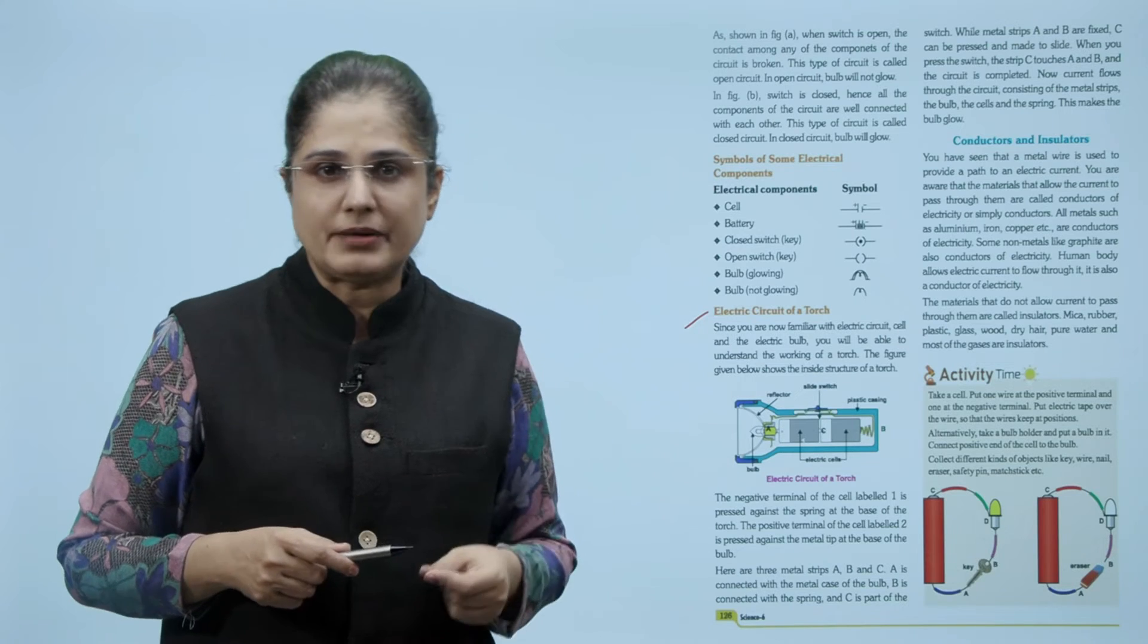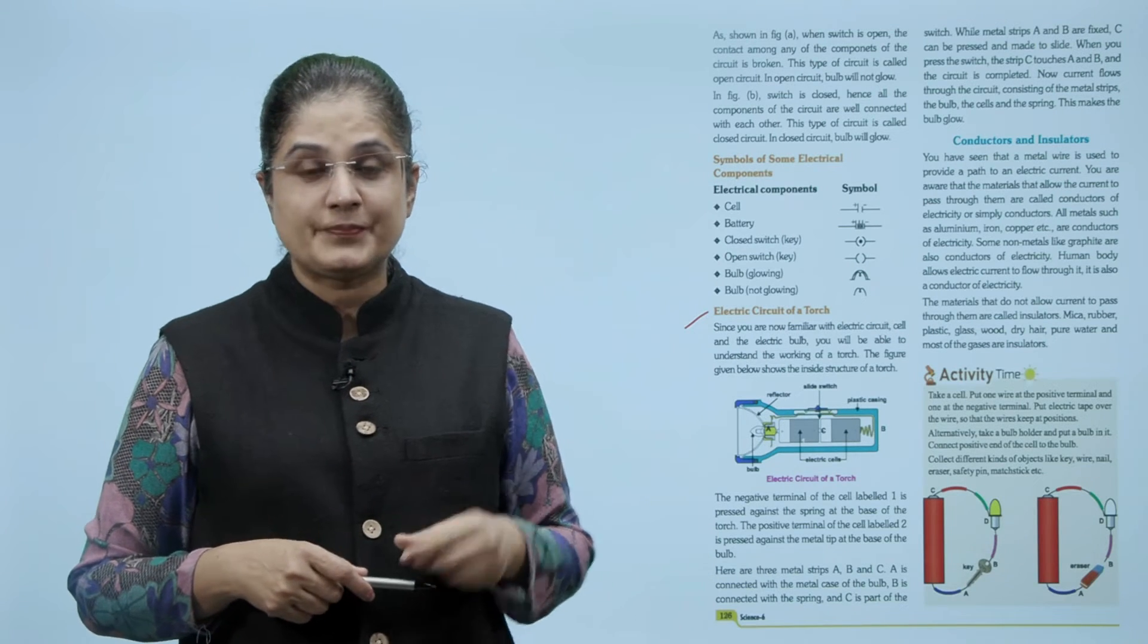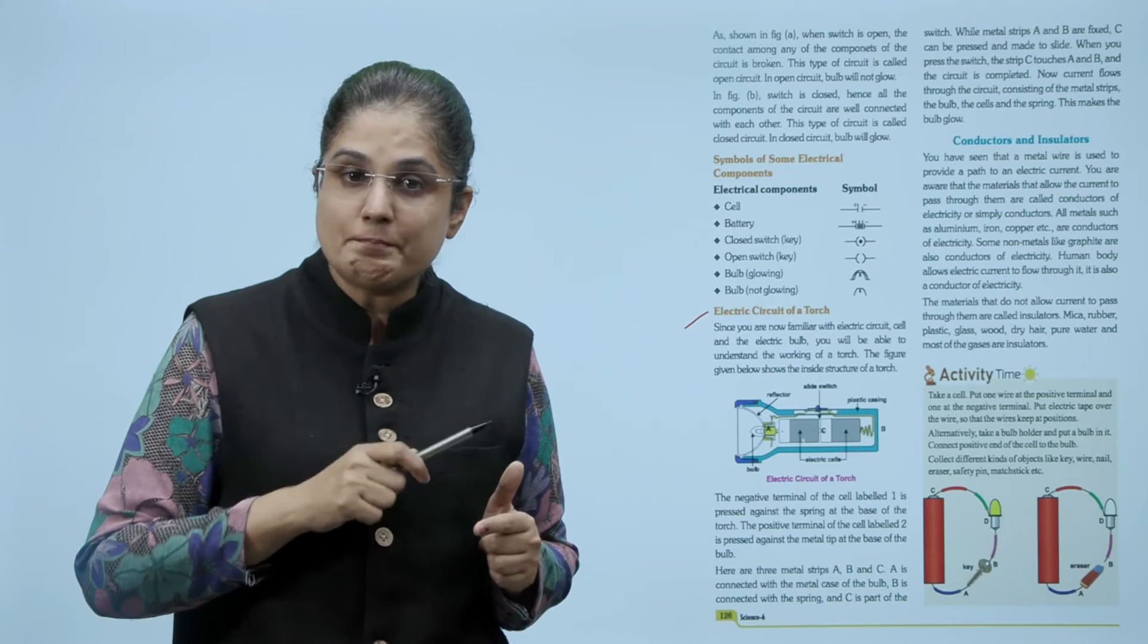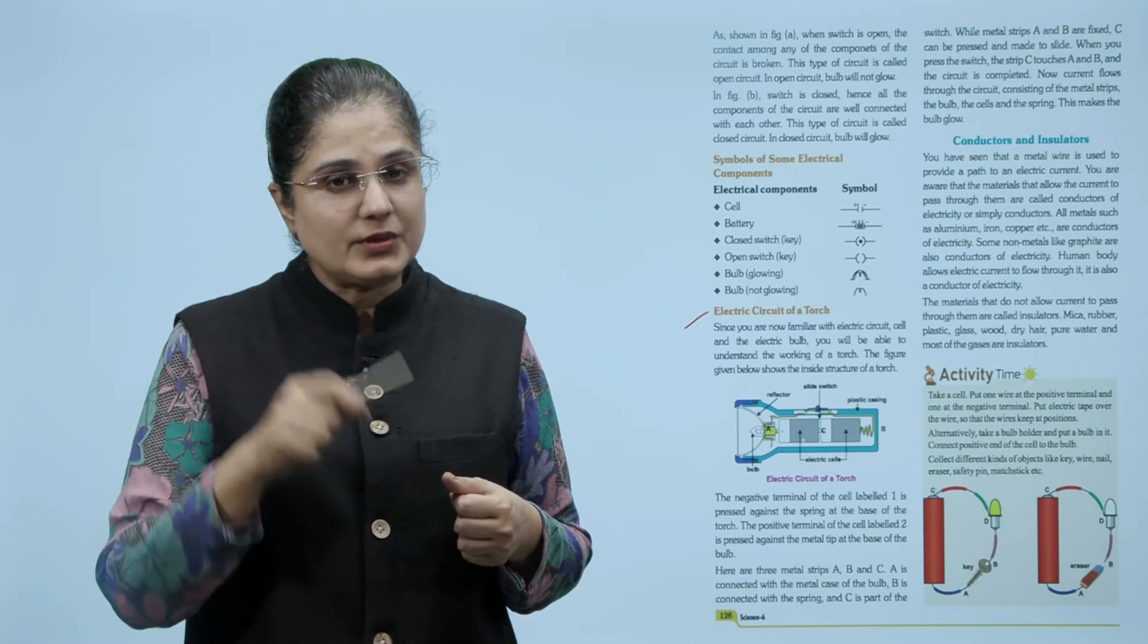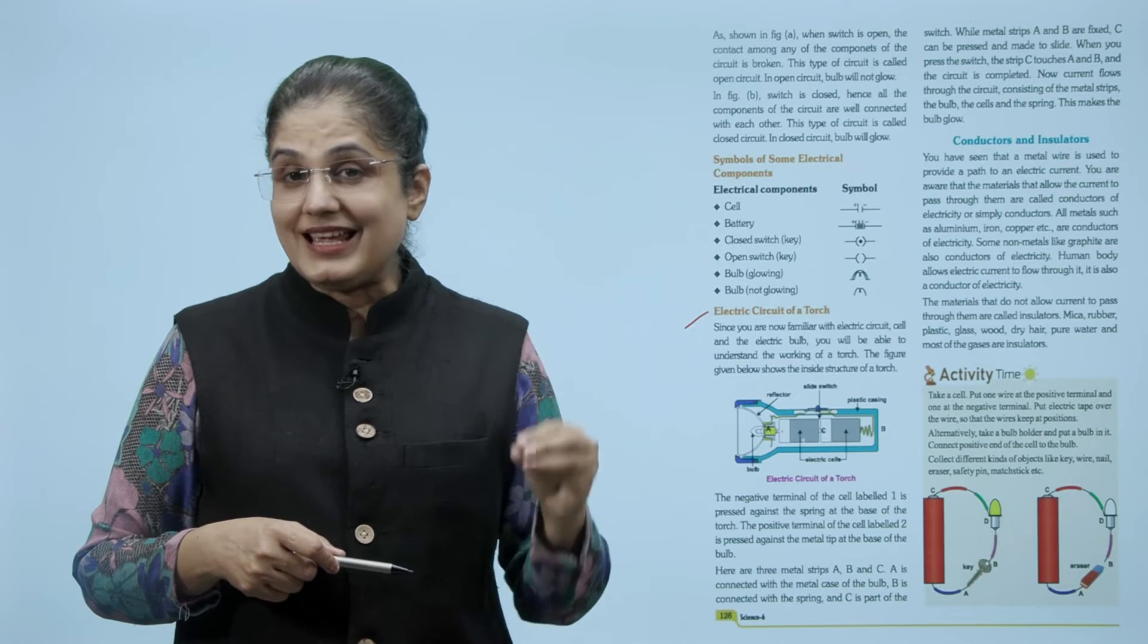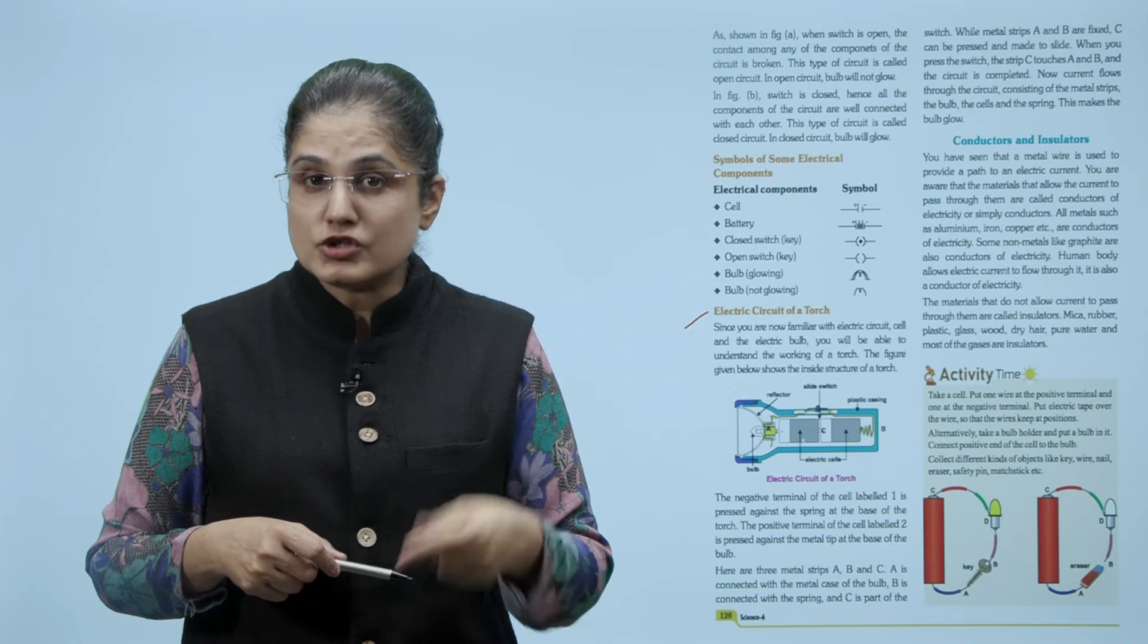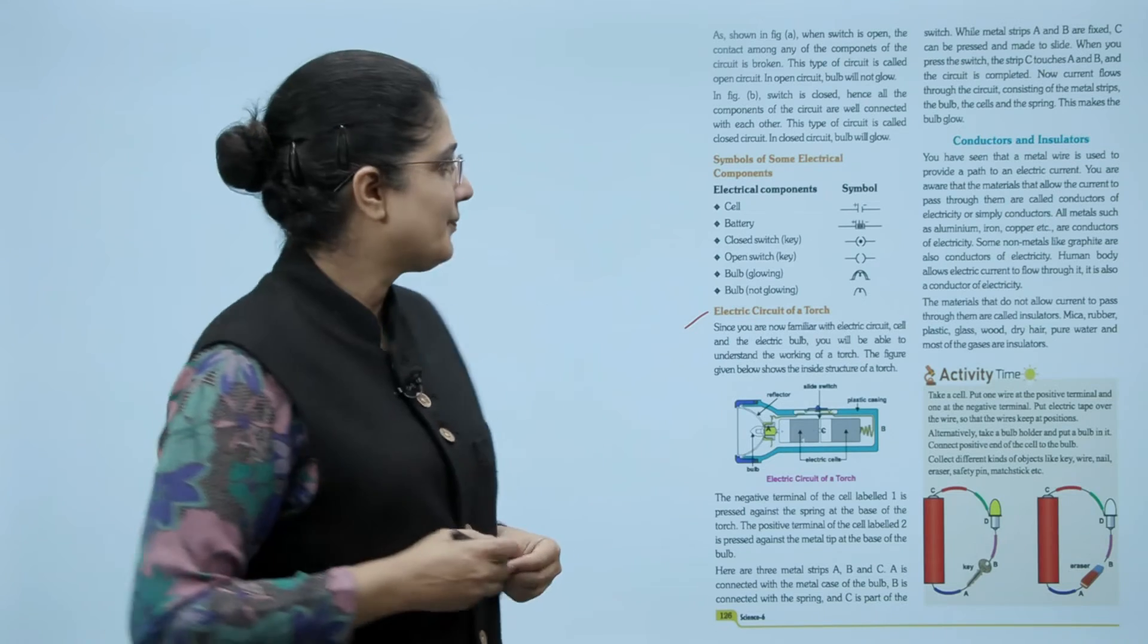Now let us look at the electric circuit of a torch. Since you are now familiar with electric circuit, cell and the electric bulb, you will be able to understand the working of a torch. The figure given here shows the inside structure of a torch. The negative terminal of the cell labeled one is pressed against the spring at the base of the torch. The positive terminal of the cell label two is pressed against the metal tip at the base of the bulb. Here are three metal strips A, B and C. A is connected with the metal case of the bulb. B is connected with the spring and C is part of the switch. While metal strips A and B are fixed, C can be pressed and made to slide. When you press the switch, the strip C touches A and B and the circuit is completed. Now current flows through the circuit consisting of the metal strips, the bulb, the cells and the spring. This makes the bulb glow.